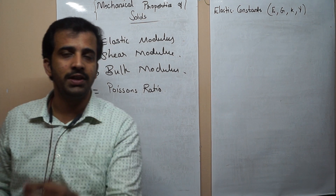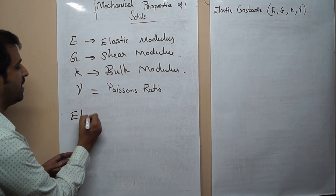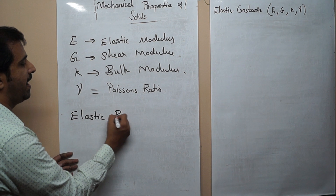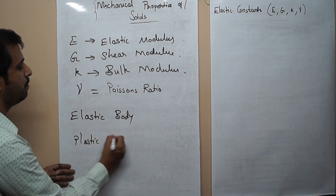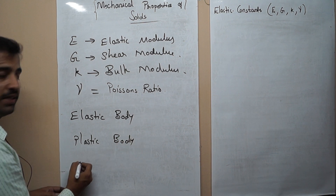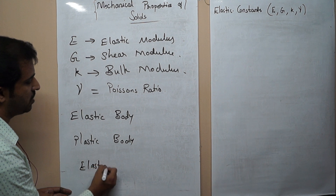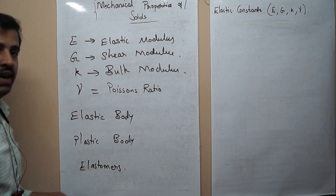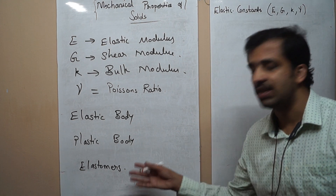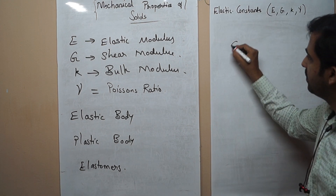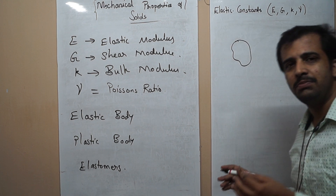Before studying these moduli, I will make clear what the different types of bodies are. The first type is the elastic body, the second type is the plastic body, and the third type is elastomers. I will explain each one — what is an elastic body, what is a plastic body, and what are elastomers.